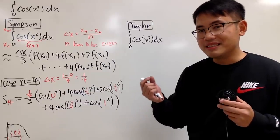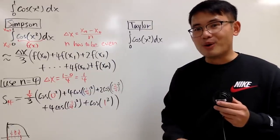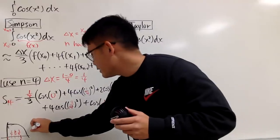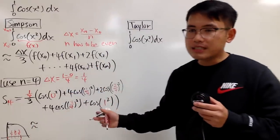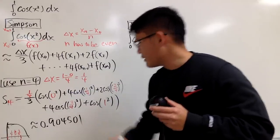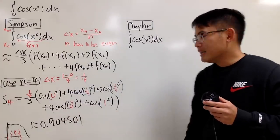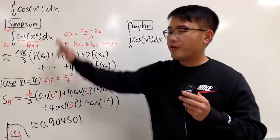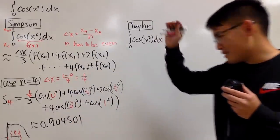In the end, you're going to use your calculator to do this. The good thing is you can use a pretty decent scientific calculator, anything that has cosine. Be sure your calculator is in radians mode. If you use a calculator, you are going to get approximately 0.904501. This is the answer from Simpson.